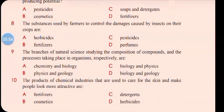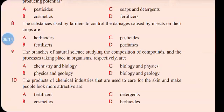Number nine: the branches of natural science studying the composition of compounds and the processes taking place in organisms, respectively, are — a) chemistry and biology, b) physics and geology, c) biology and physics, d) biology and geology. The correct answer is a) chemistry and biology. Chemistry studies the composition of compounds while biology studies the processes taking place in organisms.